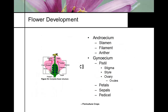The androecium refers to the male parts — stamen, filament, and anthers. The gynoecium includes the pistil, stigma, style, ovary, and ovules — along with petals, sepals, and peduncle. If a plant has all of these parts, it's called a complete flower. A perfect flower specifically requires both male and female parts; complete is the full package.